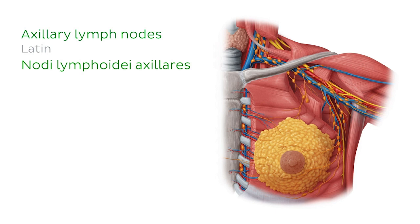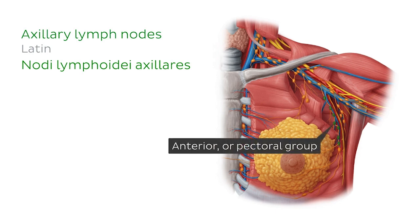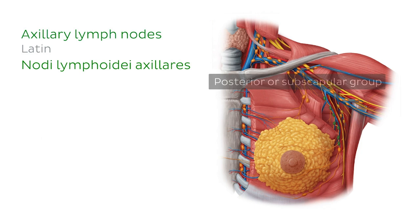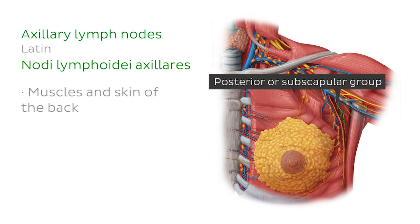The first is the anterior or pectoral group, which drains the skin and the muscles of the anterior and lateral walls of the trunk above the umbilicus and the lateral parts of the breast. The second is the posterior or subscapular group, which receives lymph from the muscles and the skin of the back from the scapular area down to the iliac crest.